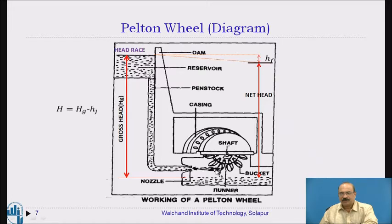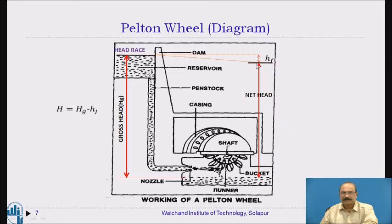The water hits the blade and because of that rotation takes place. The runner rotates because it is coupled with the blades; the runner is in turn coupled with the shaft, and the shaft gives rotary motion. The net head is measured from the reservoir surface to the turbine, after deducting the friction loss H_f.